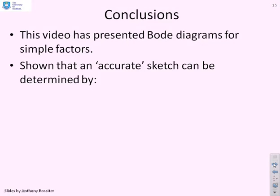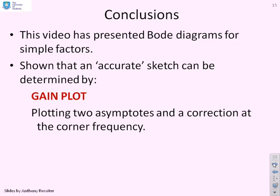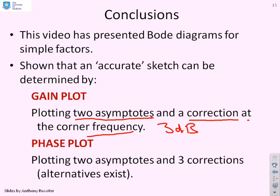In conclusion, this video has presented Bode diagrams for simple factors and shown that you can get an accurate sketch using simple observations. For the gain plot, plot two asymptotes (low and high frequency), join them, and apply a ±3 dB correction at the corner frequency. For the phase plot, use two asymptotes and apply three correction points — at the corner frequency and one decade above and below.